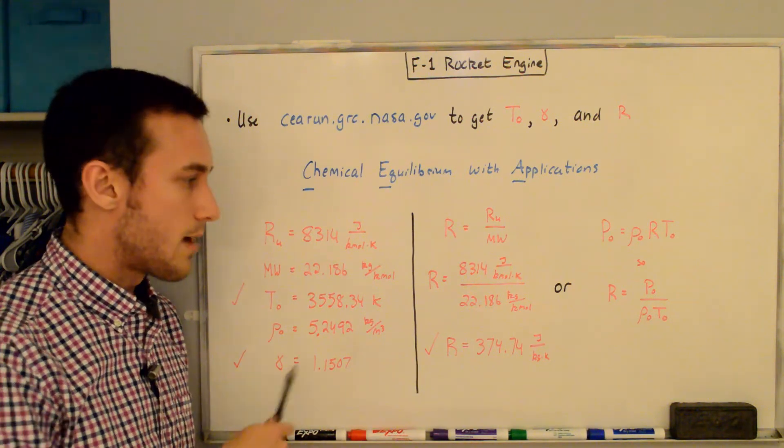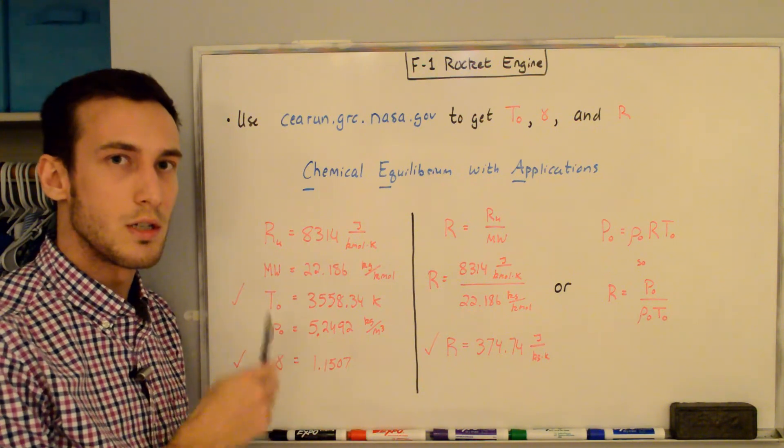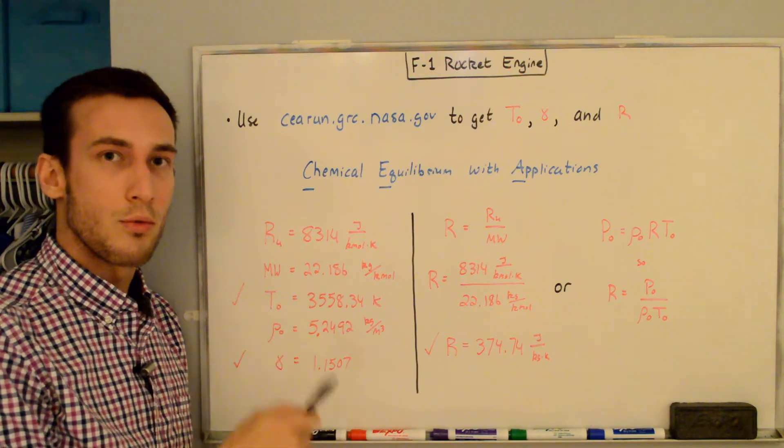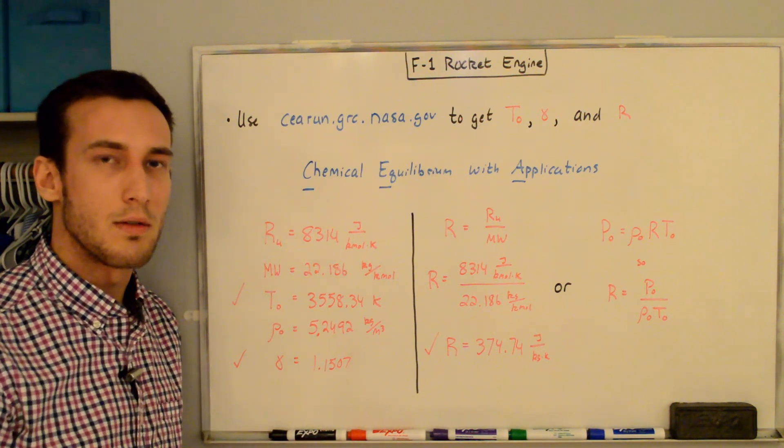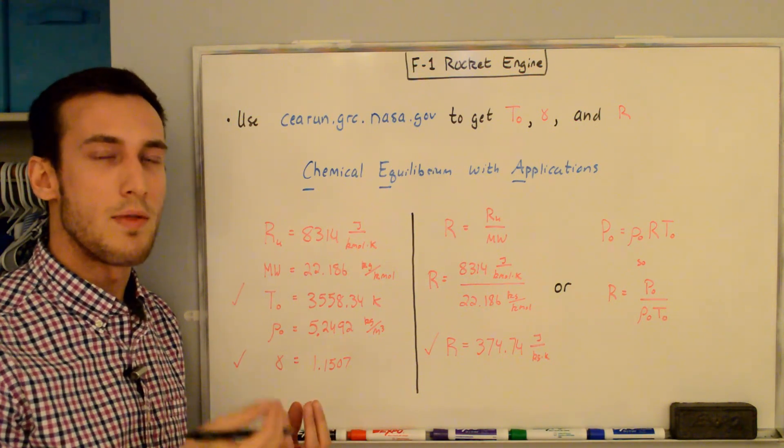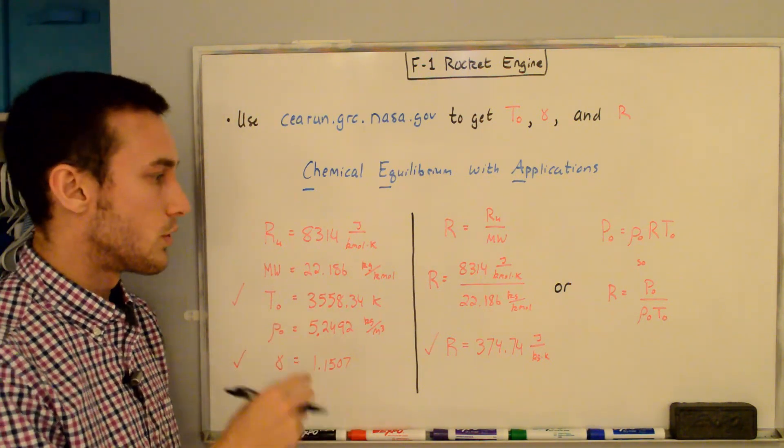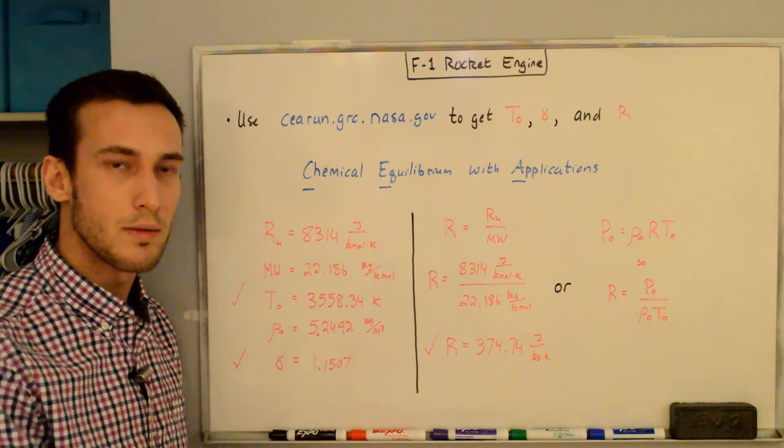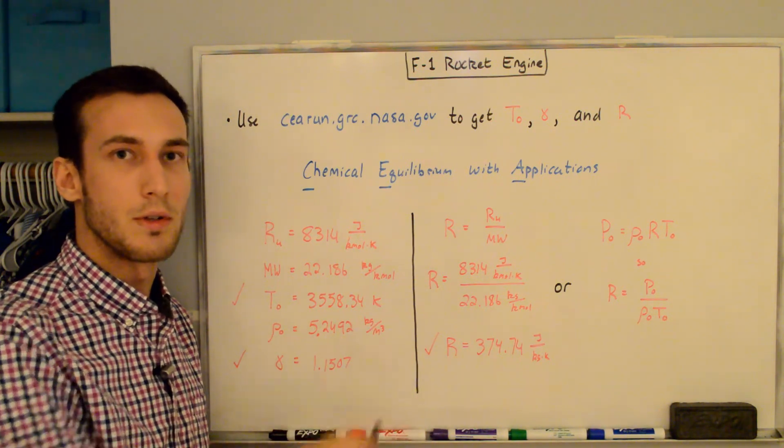I just want to make a quick note about the gamma and the R that we calculated here. These are computed based off of the reservoir conditions. These will actually change throughout the nozzle, so you'll have different values of gamma and R for the reservoir, the throat, and the exit. Now there's actually an option on the CEA website that will compute these values for a rocket, so it'll give you the reservoir, the throat, and the exit values, and you'll note that these gammas and R's change throughout. So in our analysis, we're going to assume the gamma and the R are the values we computed for the reservoir, and essentially we're saying that gamma and R remain constant throughout the nozzle up until the exit.